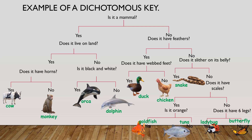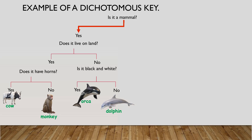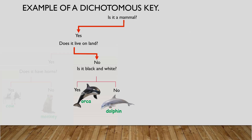You're going to ask the first question: is my unknown animal a mammal? Yes or no? You look at it and reply yes. Based on this answer, you can disregard the right side of the key because those are the non-mammals. Your answer leads you to the next question: does my mammal live on land? No, it doesn't. So we disregard the monkey and the cow. This leads you to the next question: is my unknown animal black and white? No, it is not. Your animal is now identified as a dolphin.